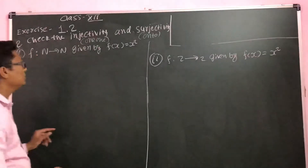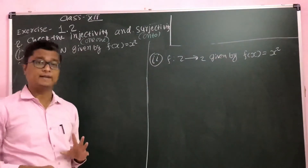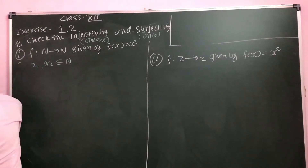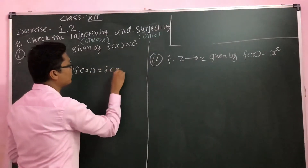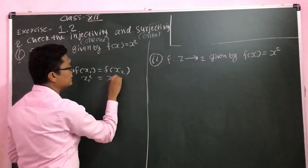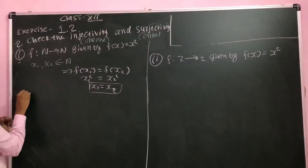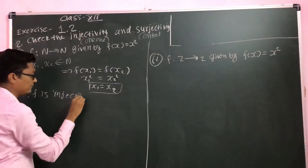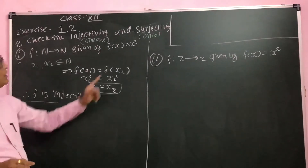The first function is f: ℕ→ℕ given by f(x) = x². If I choose any two variables x1 and x2 which belong to ℕ, and if f(x1) = f(x2), then it will be x1² = x2². Taking the square root, x1 becomes x2. So the function f is injective — it is a one-one function.